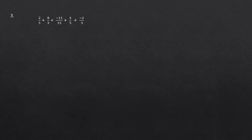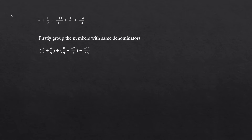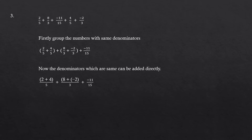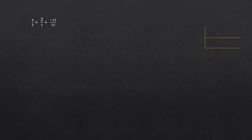Question number 3: 2 by 5 plus 8 by 3 plus minus 11 by 15 plus 4 by 5 plus minus 2 by 3. First we will group the numbers with same denominators. Now we will consider terms in the bracket. Since we have same denominators, we can add the numerator keeping the denominator: 2 plus 4 by 5 plus 8 plus minus 2 whole divided by 3 plus minus 11 by 15, which is equal to 6 by 5 plus 6 by 3 plus minus 11 by 15. We can cancel 6 and 3 by dividing by 3. Now we have 6 by 5 plus 2 by 1 plus minus 11 by 15.